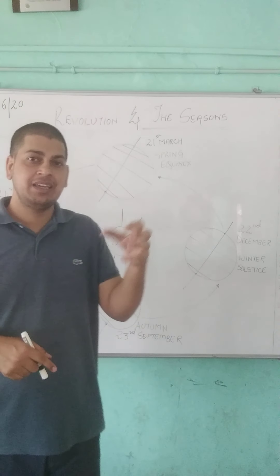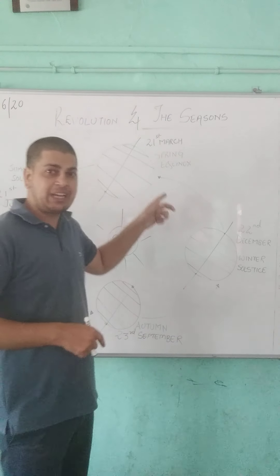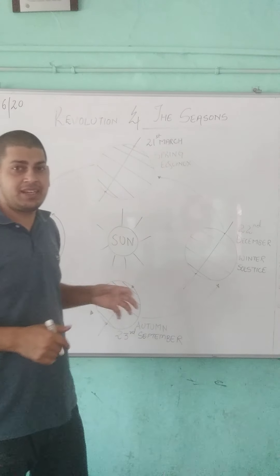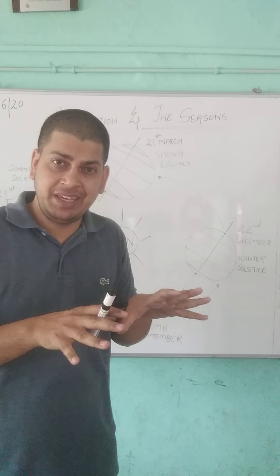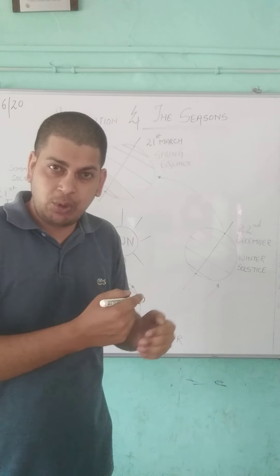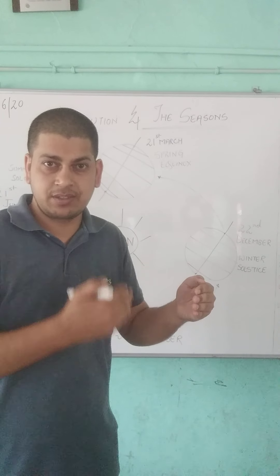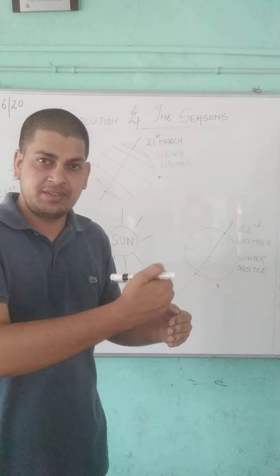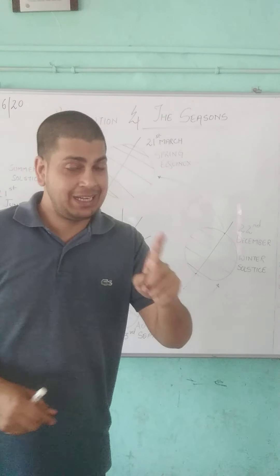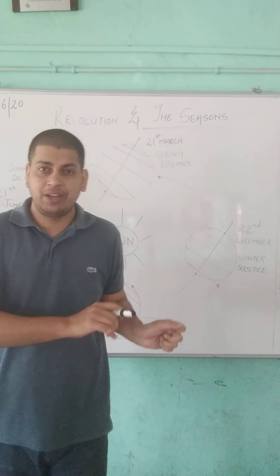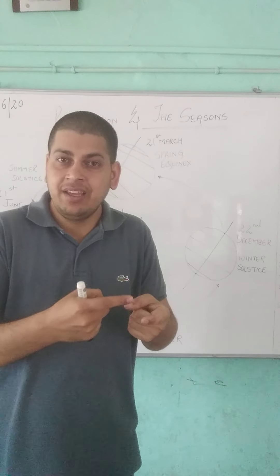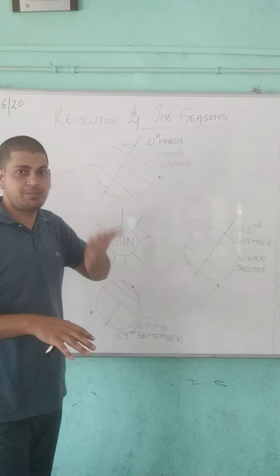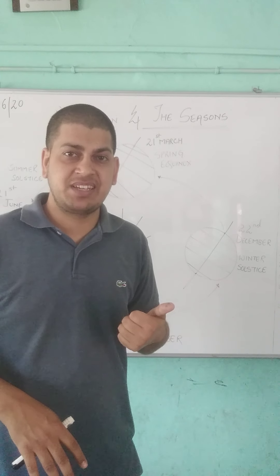The extra day added in February comes from the time we have ignored for convenience. This 1/4 day — or 6 hours every year — is calculated and accumulated: 1 year is 6 hours, 2 years is 12 hours, 3 years is 18 hours, and the 4th year gives 24 hours, which equals one full day. So this extra day is added in February every 4 years, making that year a leap year with 366 days.